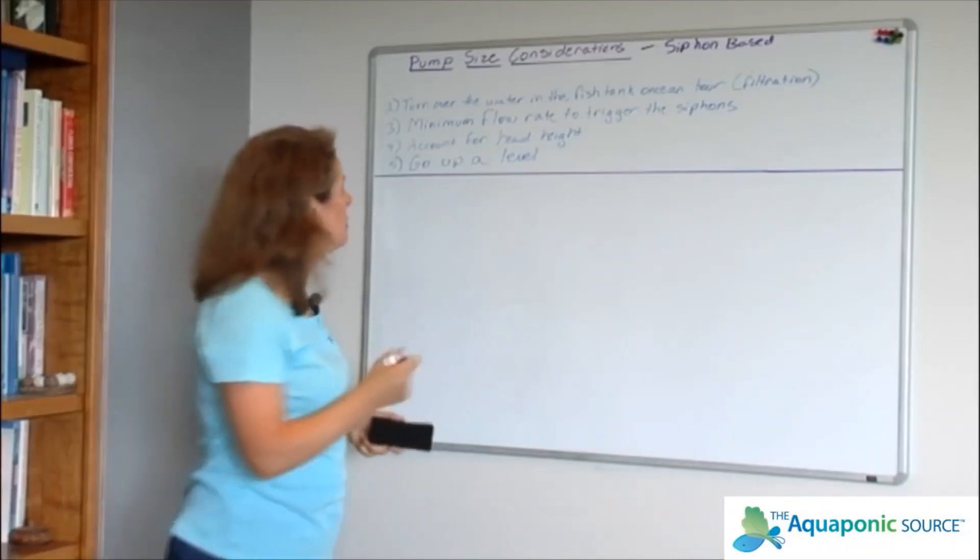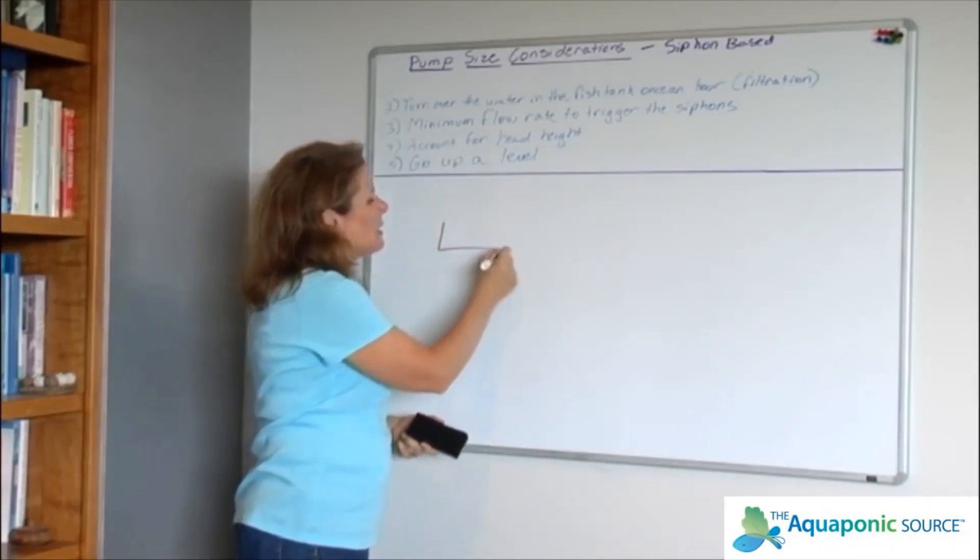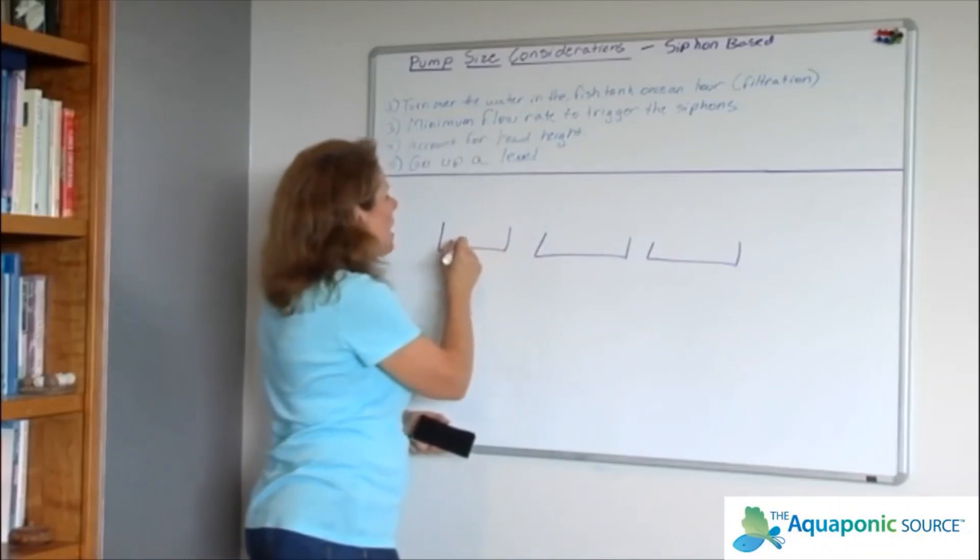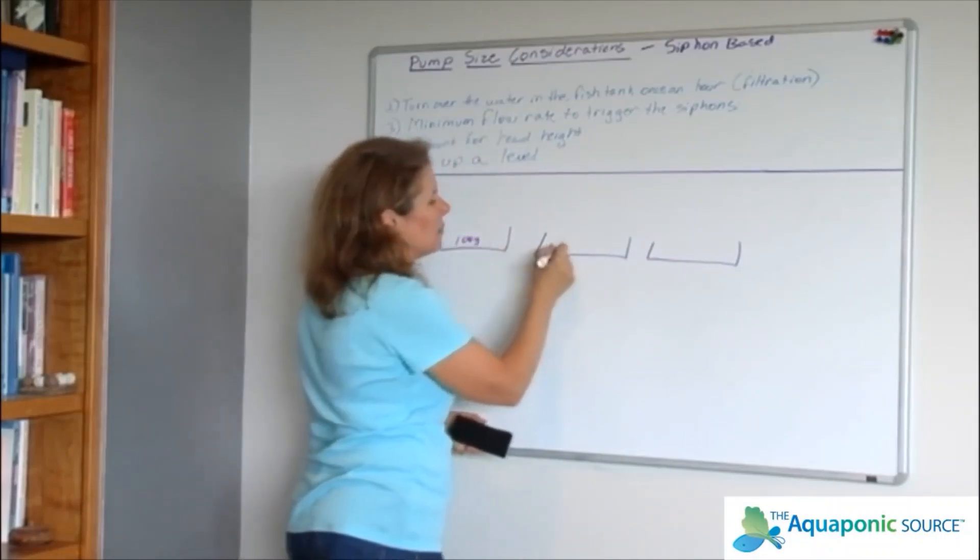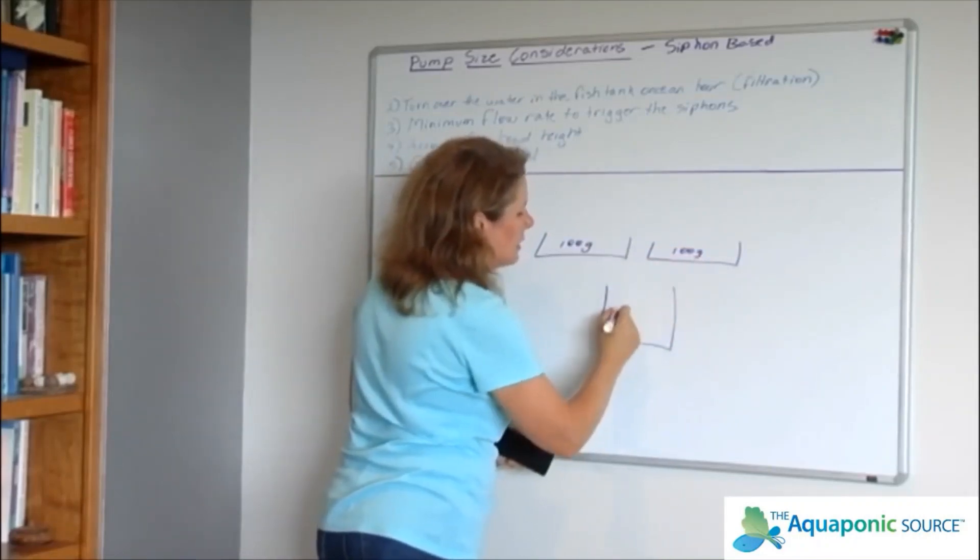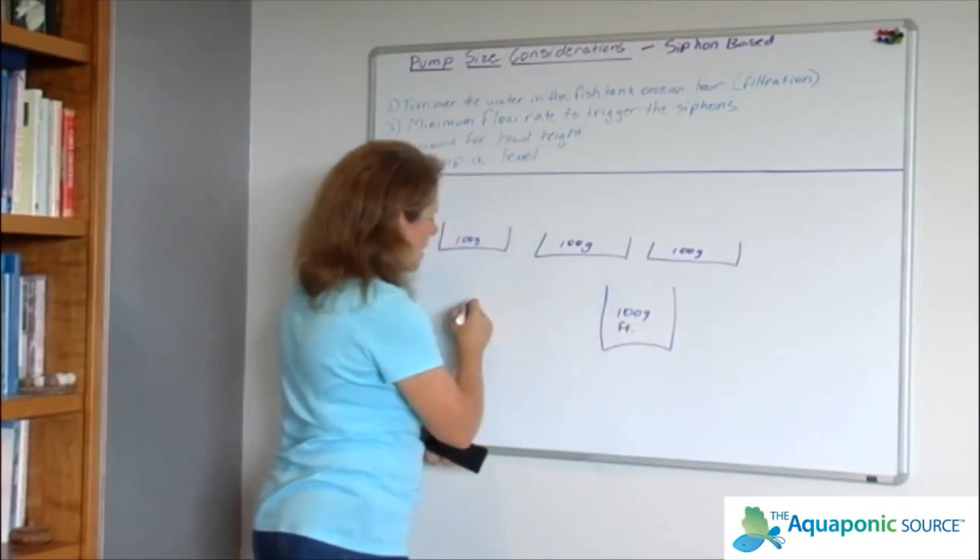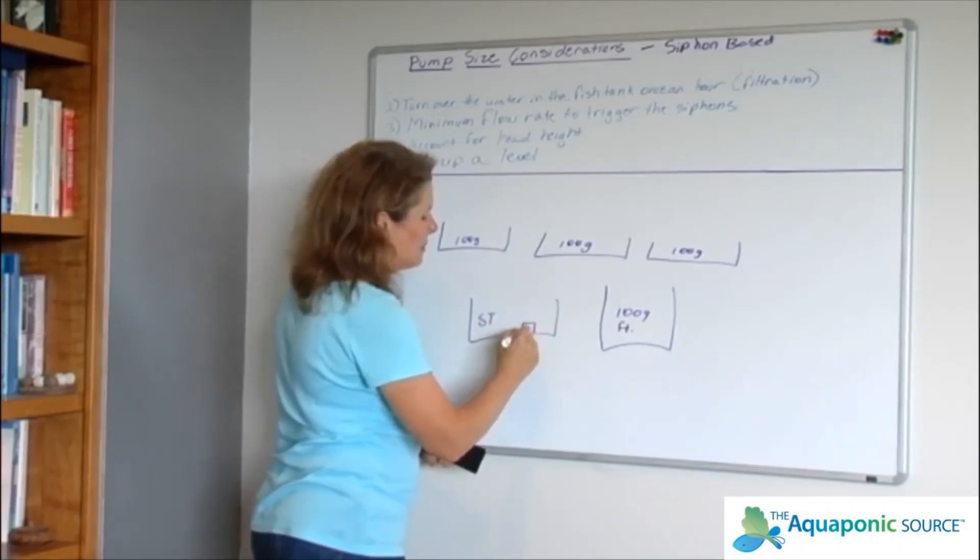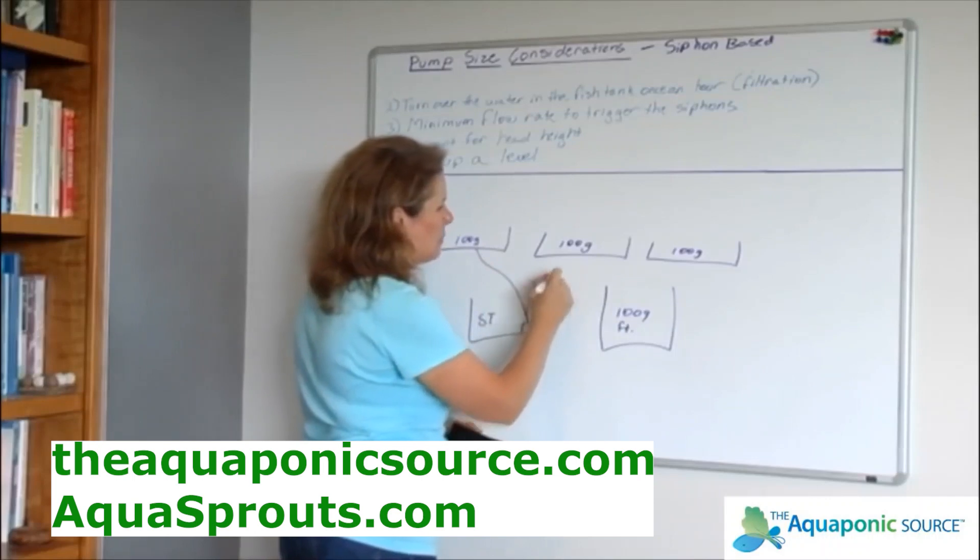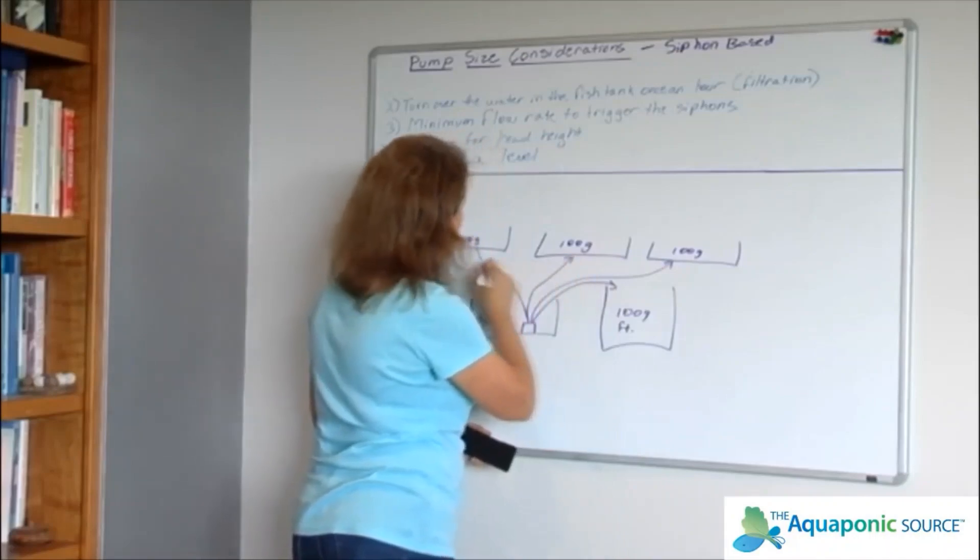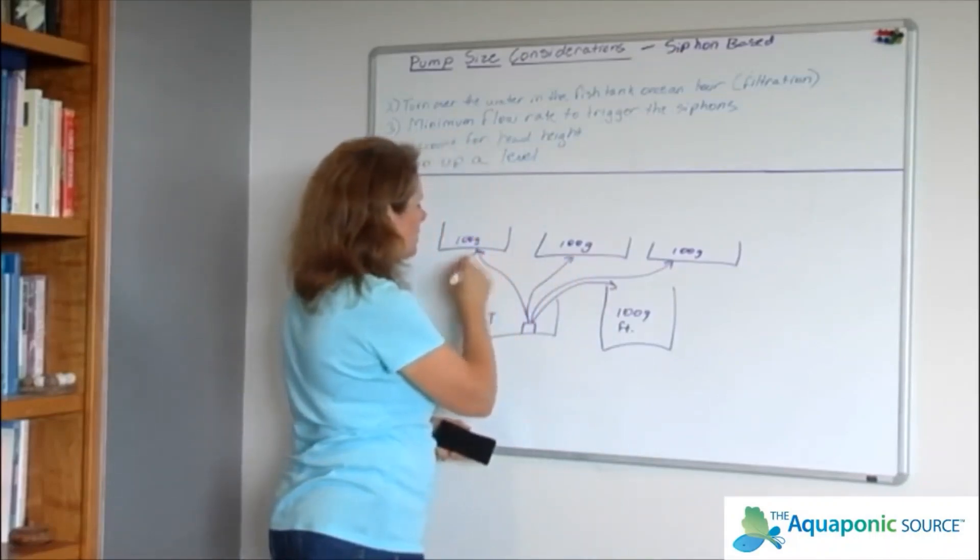Let's go through an exercise and see if we can figure out how big of a pump we need. Again, I'm going to go with 100 gallon volume grow beds, but I'm going to have three of them now. 100 gallon, 100 gallon, 100 gallon. I've got a fish tank here, let's say my fish tank is still 100 gallons. And I've got a sump tank over here, and this is where my pump exists. My pump is pumping water all the time to three grow beds and to the fish tank.